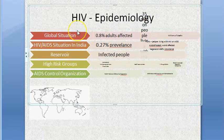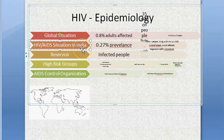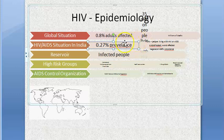For epidemiology: globally, 0.8% of adults are affected — about 35 million people living with HIV — and there is no cure. In India, the prevalence is 0.27%, lower than the global figure. However, Nagaland has a prevalence of 0.88%, higher than the global situation. The most affected Indian states are Andhra Pradesh, Maharashtra, and Karnataka.